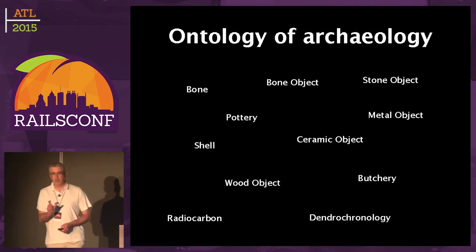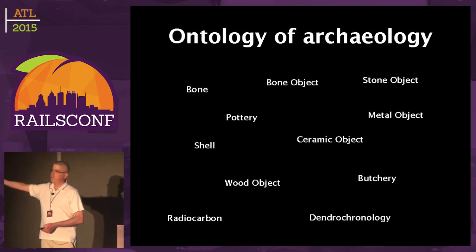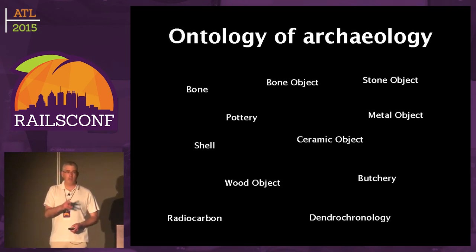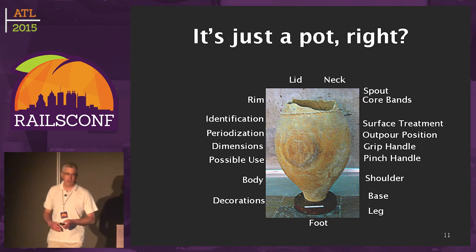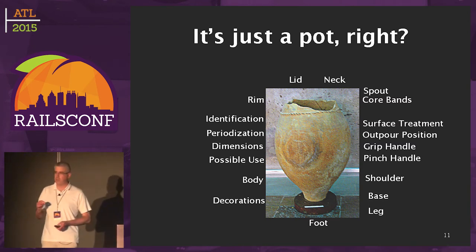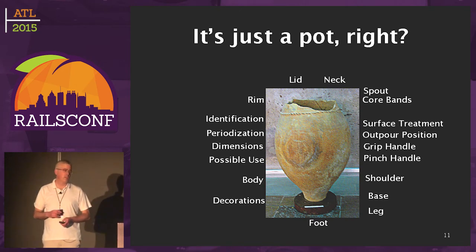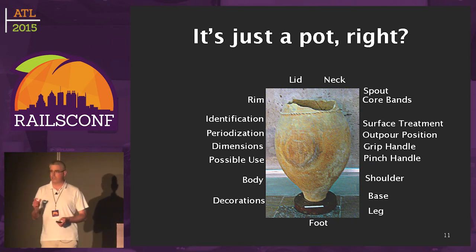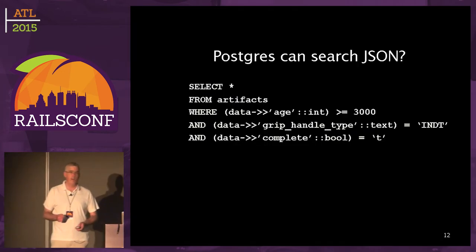There's some metadata that everything has: a period in which they guess it might have started being from, and a period in which it ended. If they're sure it's from the early Bronze Age, those would be the same. Everything gets periodized, and what place they found it at, and who found it. But then each type of thing has different attributes — and these things can have a lot of attributes. It's just a pot, but when an archaeologist looks at it they see pinch handles, grip handles, out-core positions, whether it's a lid or a neck, core bands, colors — dozens of attributes. A bone is just as complex: whether it's been butchered, how it was butchered, what it was butchered with. It blew my mind how much they record.